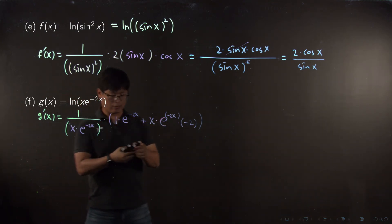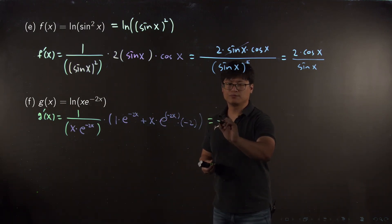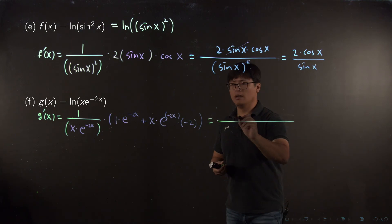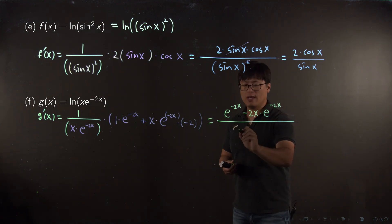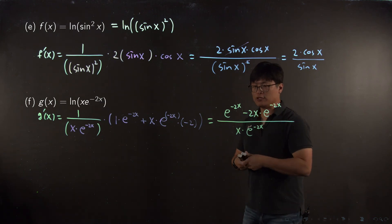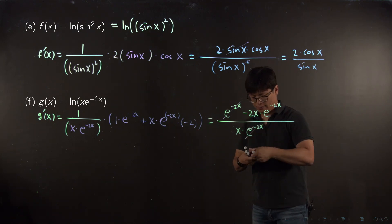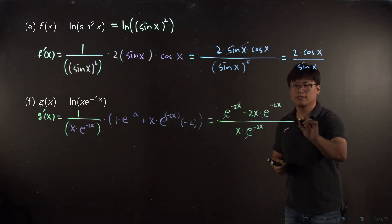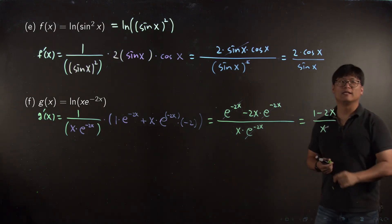Let me simplify this. It equals e to the minus 2x minus 2x times e to the minus 2x over x times e to the minus 2x. For this problem we can simplify by dividing e to the minus 2x everywhere. Then your final answer is 1 minus 2x over x.